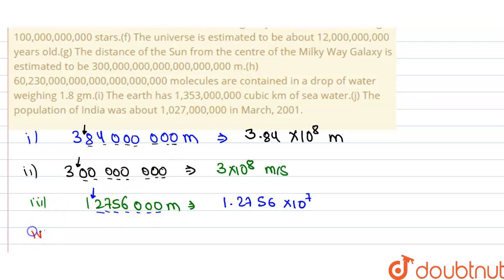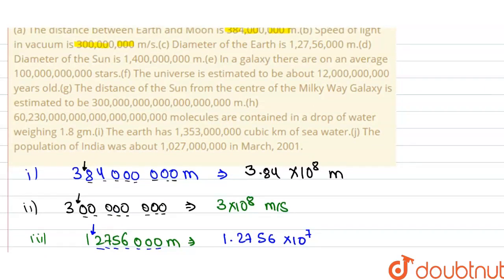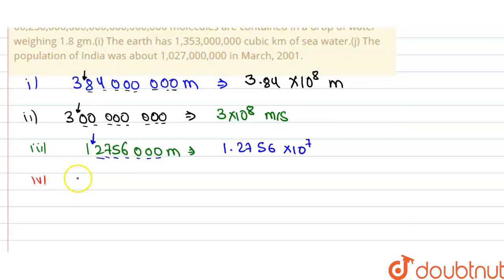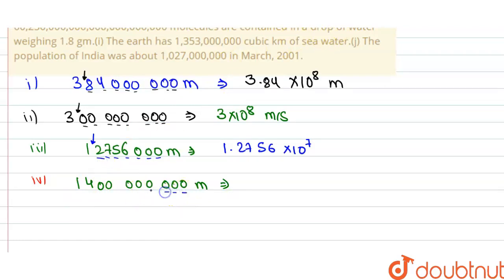Now the fourth statement: the diameter of the Sun is 1,400,000,000 meters. So the standard form is obtained by counting the digits: 1, 2, 3, 4, 5, 6, 7, 8, and 9. We can write this number in standard form as 1.4 × 10⁹. Write the non-zero digits after the decimal place, and the count gives 10 raised to the power 9 meters.